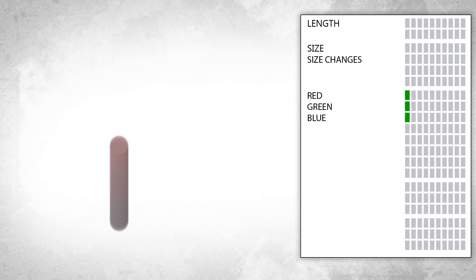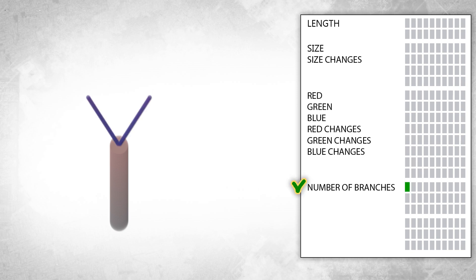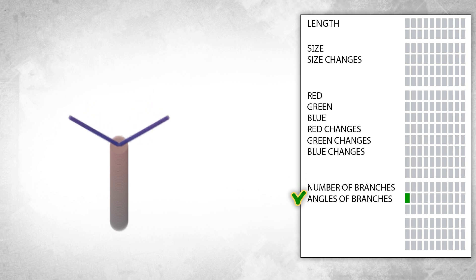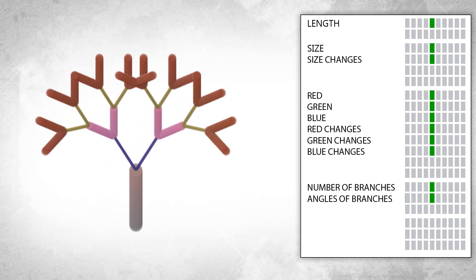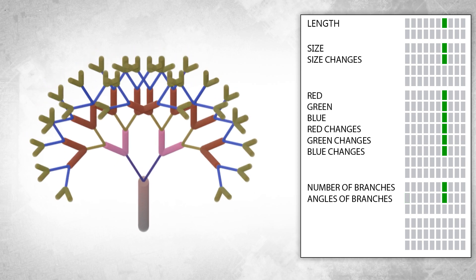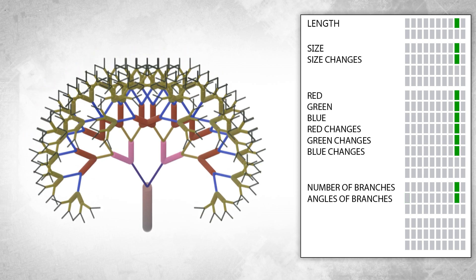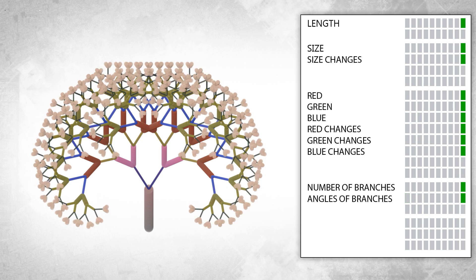We introduce three additional genes, each specifying the red, green, and blue color parameters of the segment. For smoother color transitions, we introduce three more genes to define the changes in respective color parameters. After an agent completes its work, it terminates and may leave up to three offspring. The number of new agents is determined by a specialized gene. A gene governing segment branching angles is also present.